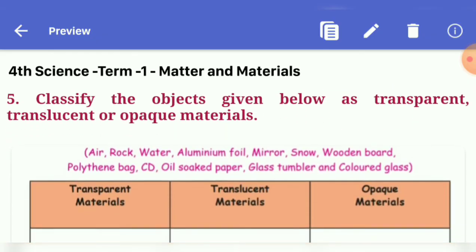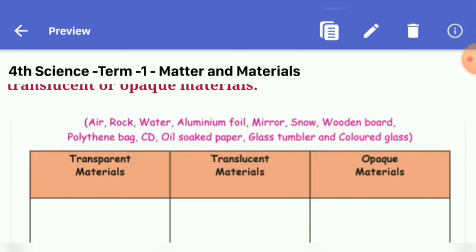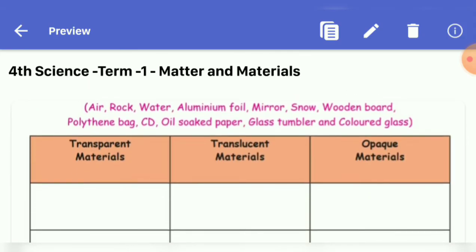Next, fifth question: classify the objects given below as transparent, translucent or opaque materials. Here you can see the box. Classify, which one transparent materials, translucent materials, opaque materials.